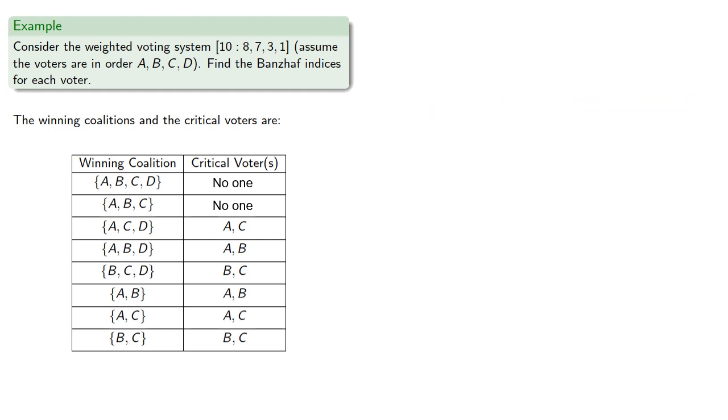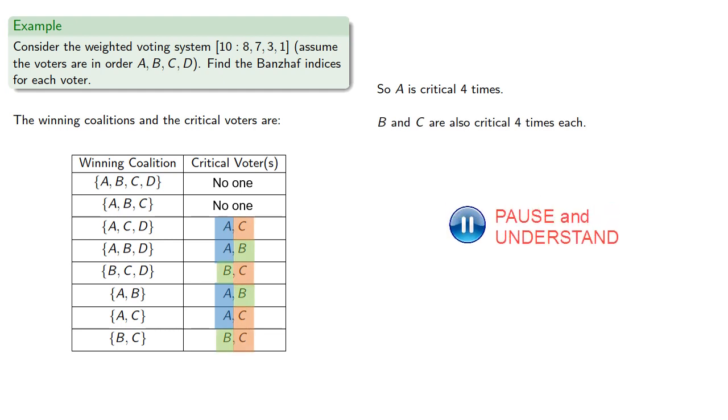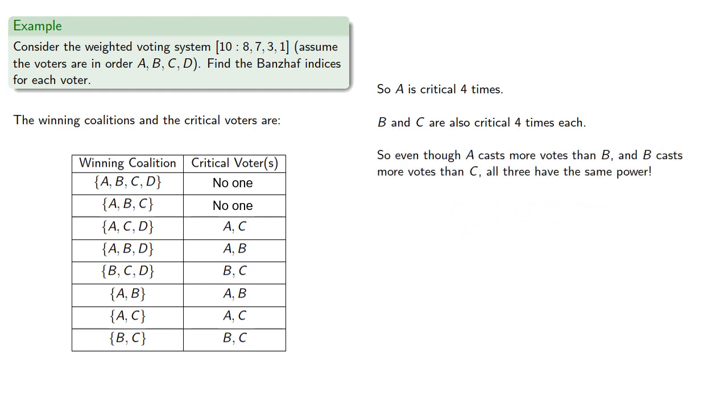And now we count. A is critical four times, B and C are also critical four times each. So even though A cast more votes than B, and B cast more votes than C, all three have the same power.